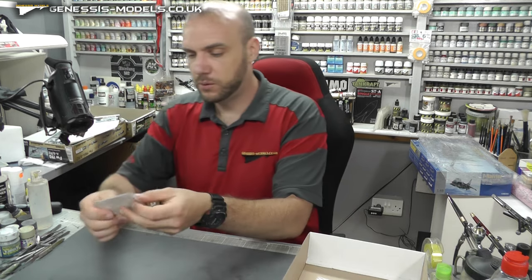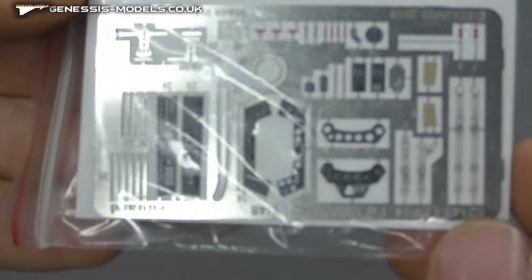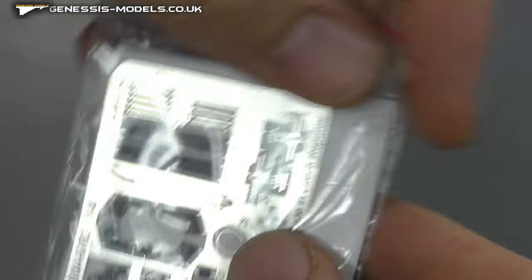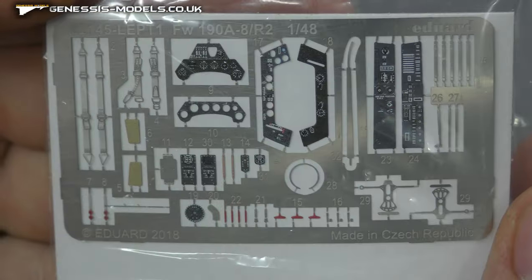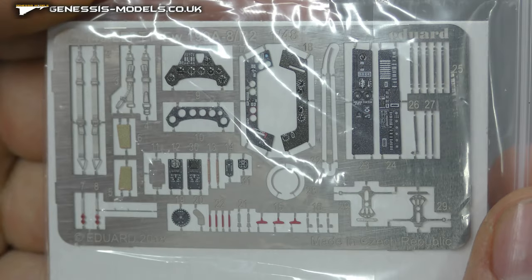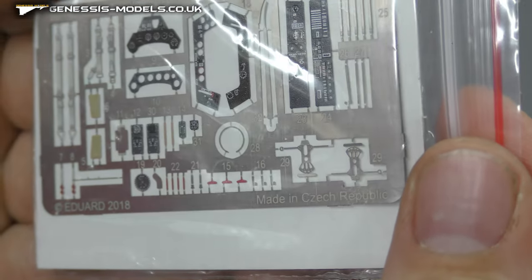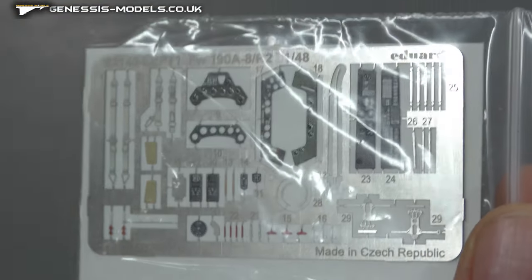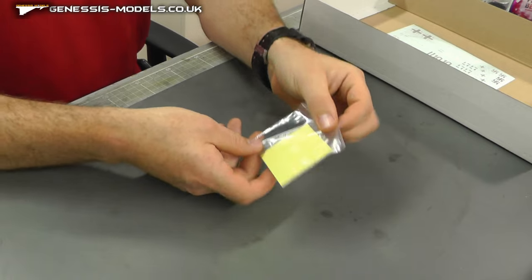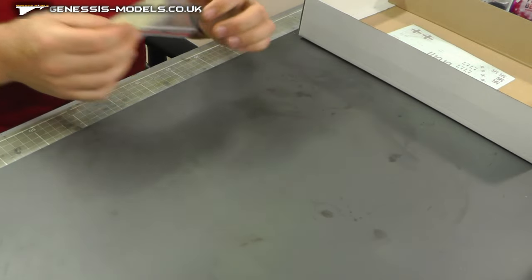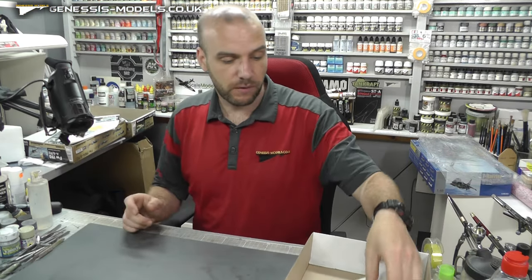We do get some photo etch with this. We have the nice instrument display panels and all your little goodies to go around there, some seat belts and everything. It should really jazz your cockpit up really nice. Then we have some canopy masks, which is always a good one. Can't really see them on camera, but they always really help.